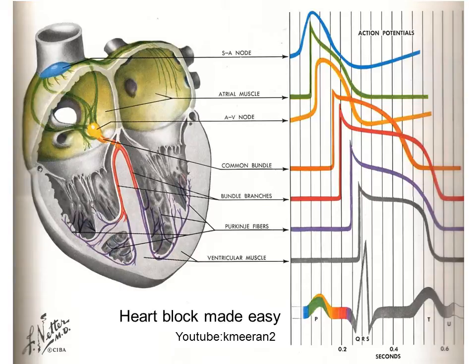Sometimes the atria and ventricles contract together, and if that happens the tricuspid valve will be closed. This means when the atrium contracts the blood has to go gushing back up, and that would cause a cannon wave in the JVP.